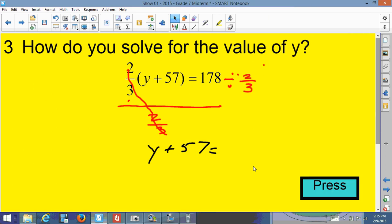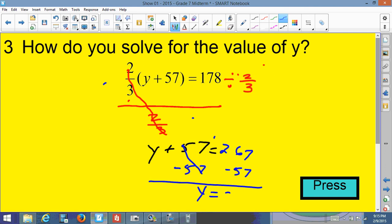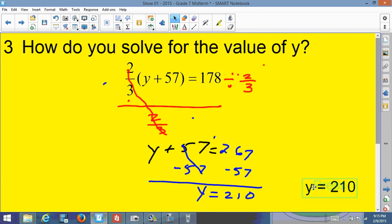And now I've got to divide 178 by 2/3. So let's get the calculator. 178 divided by 2/3, and that gives me 267. Now I've got to figure out what number plus 57 equals 267. Well, if I just minus 57 from both sides, that will cancel out, leaving me with y equals 210. So y is 210. That's how you would solve for y.